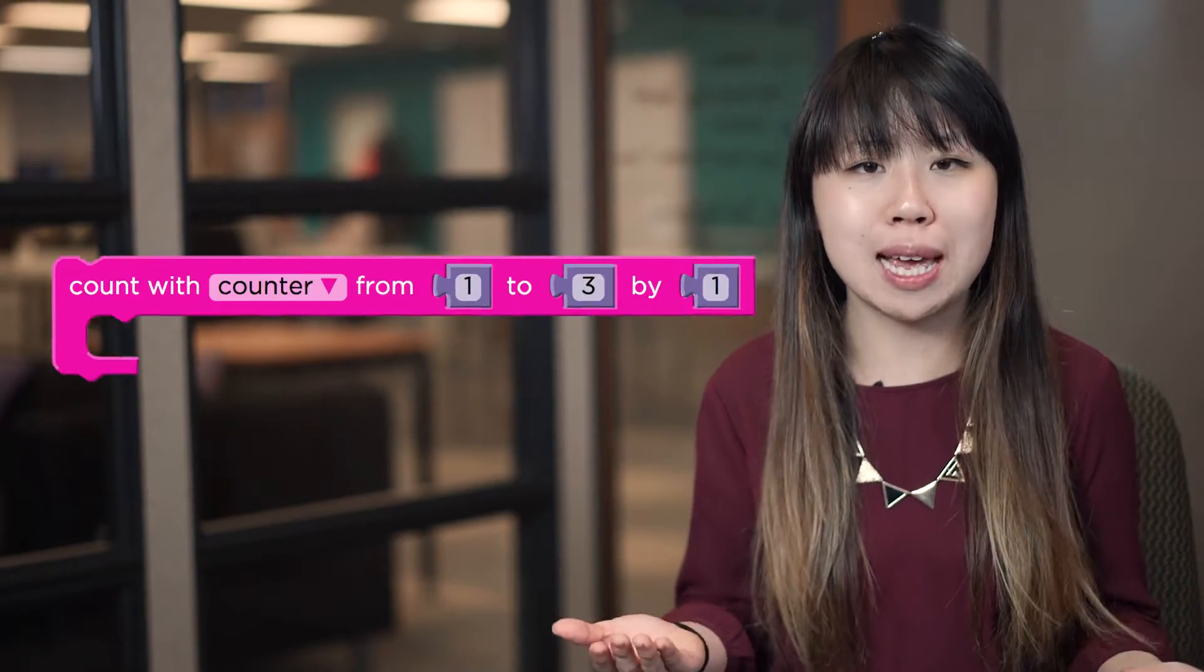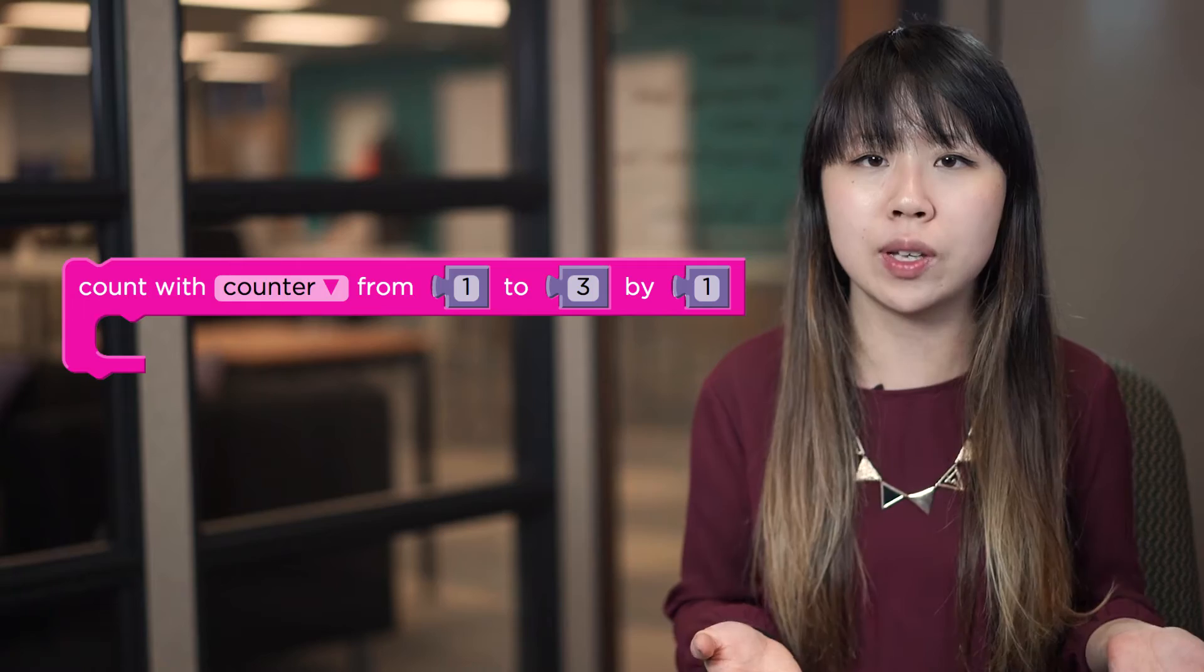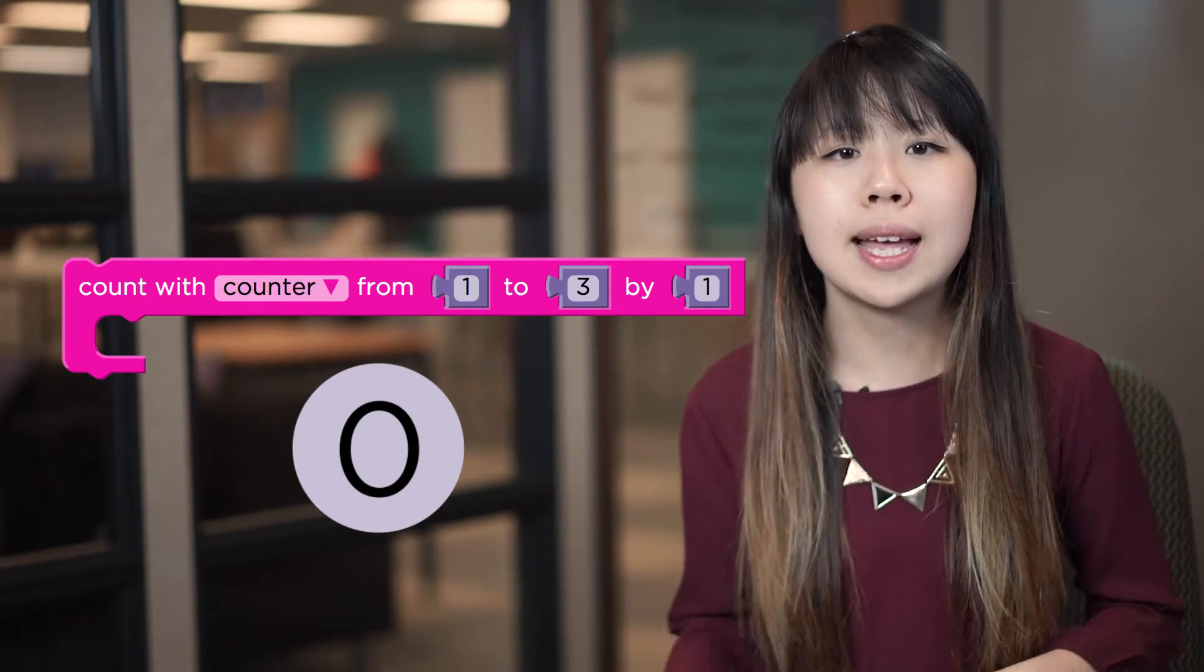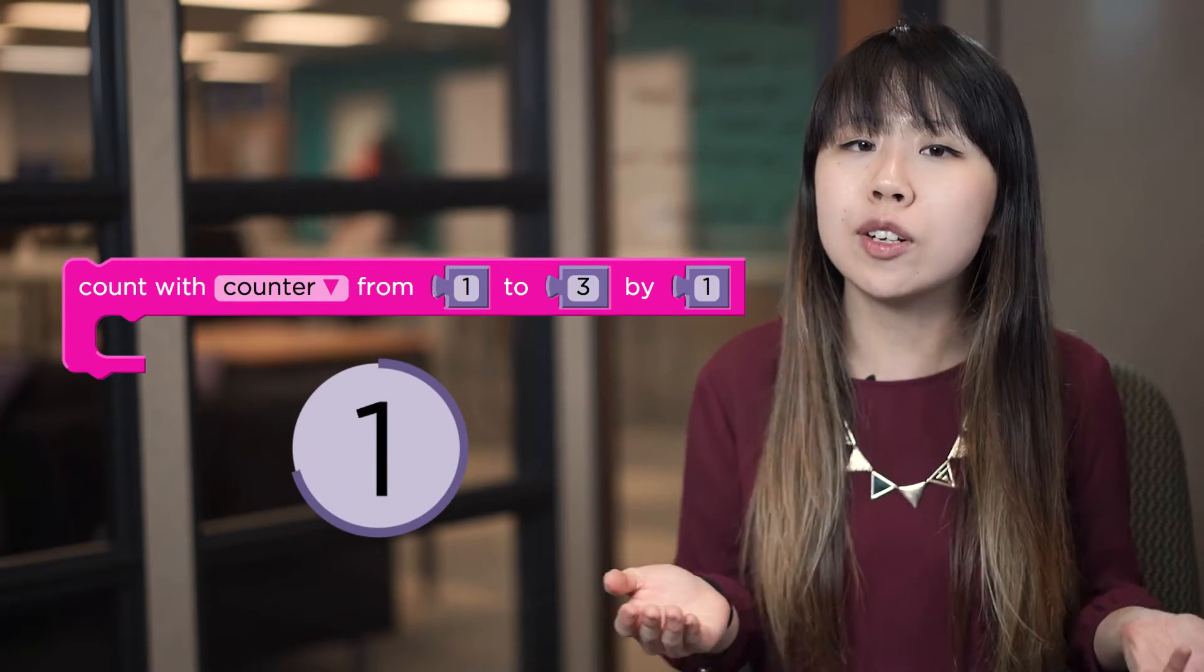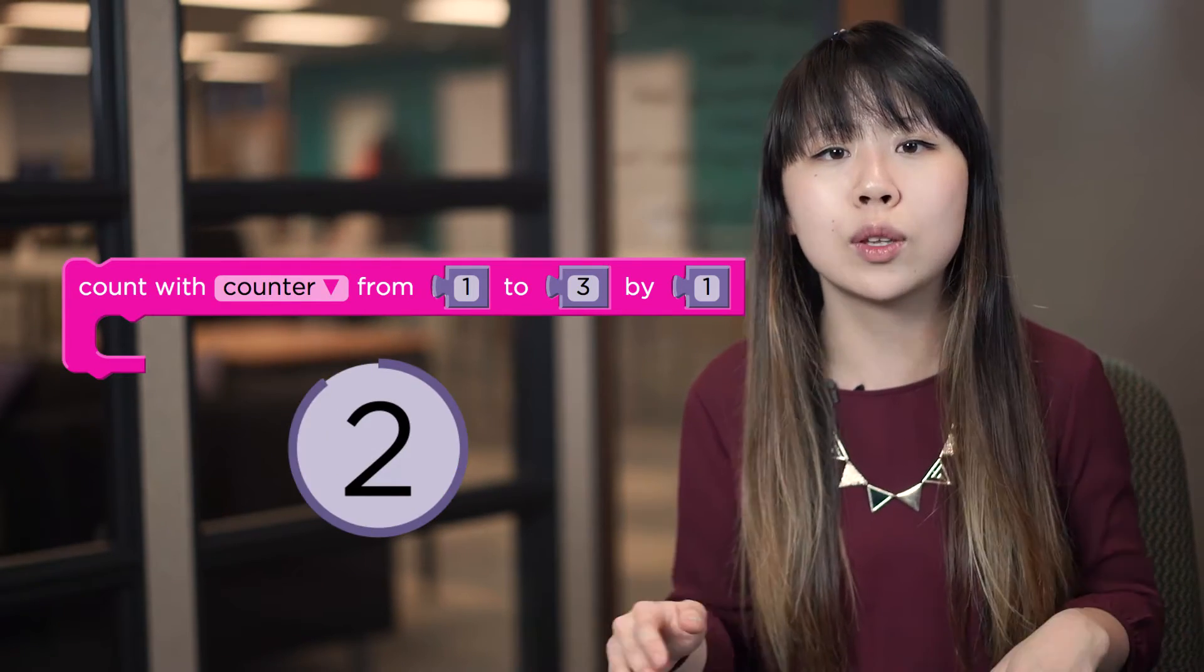The for loop knows how many times it has run by using a counter variable that is set to the starting value at the beginning of the loop and has the increment added to it each time the loop is run. As soon as the counter variable is greater than the ending value, the loop stops running.